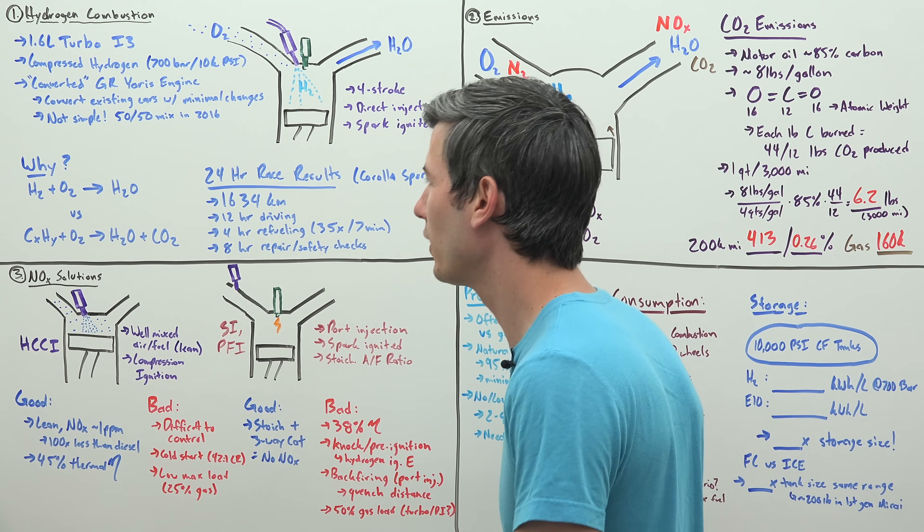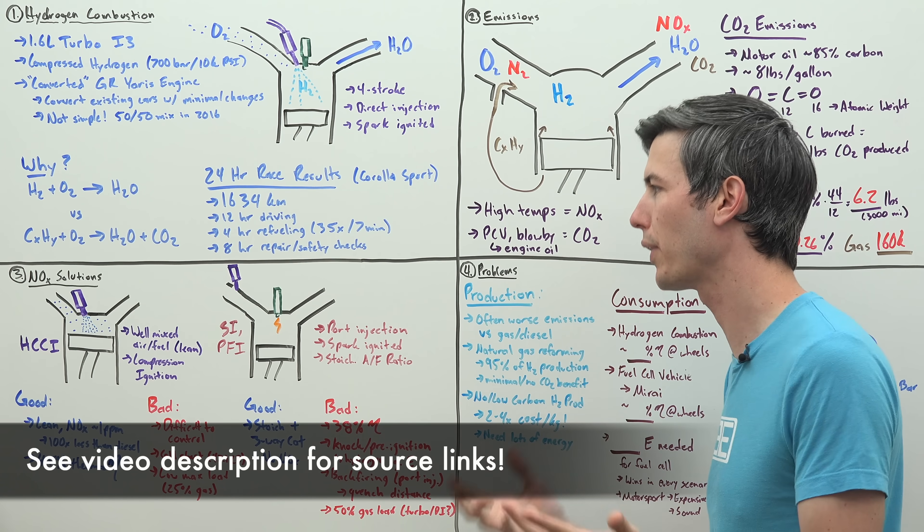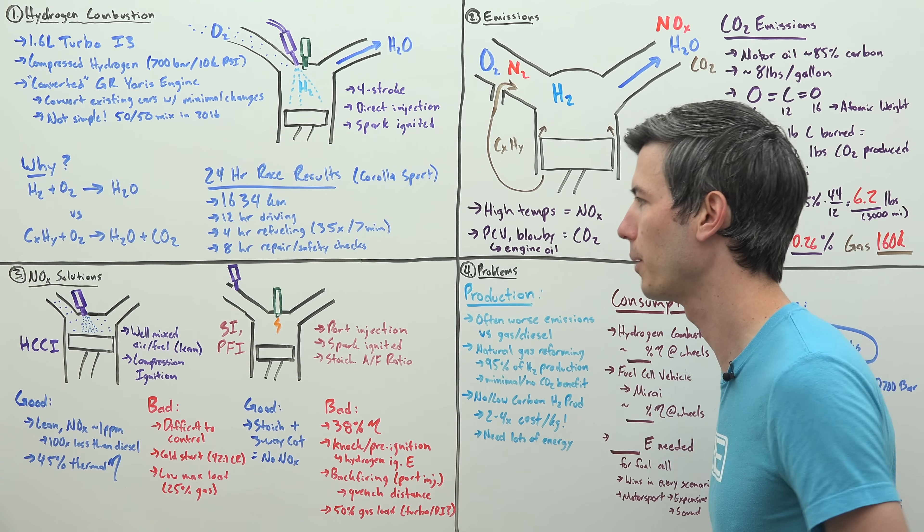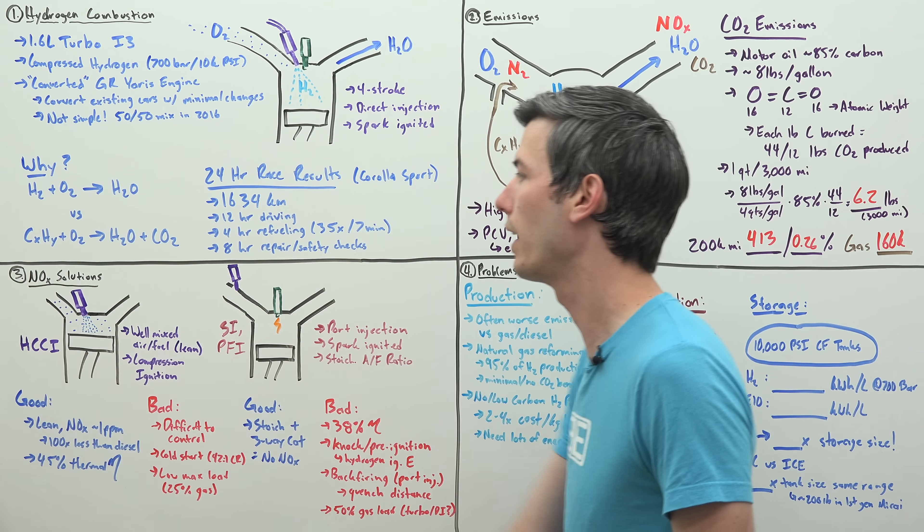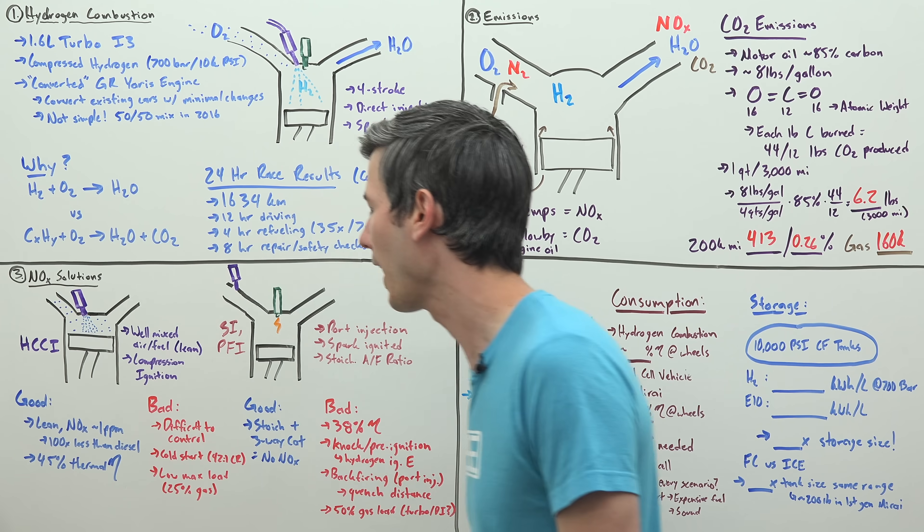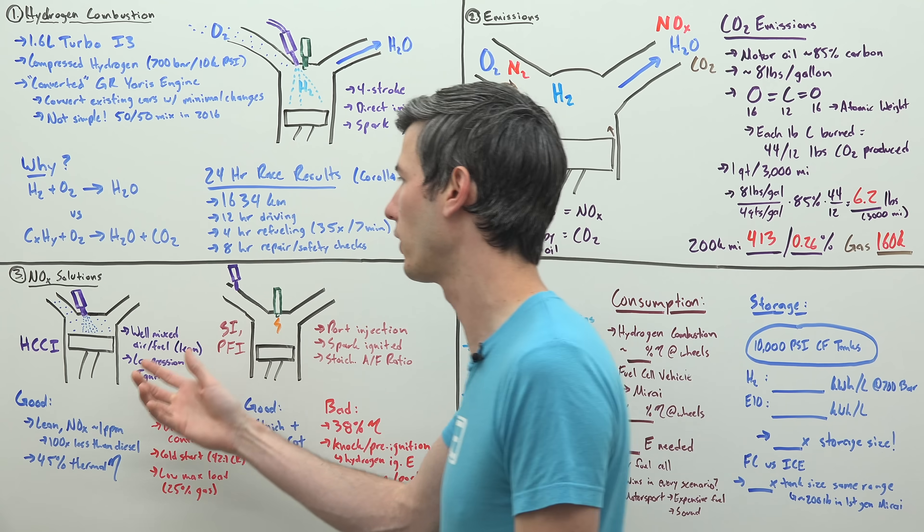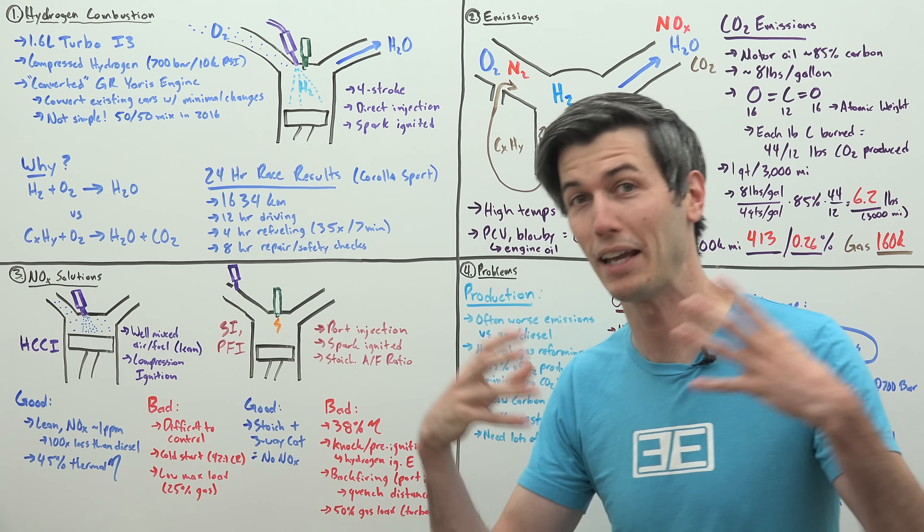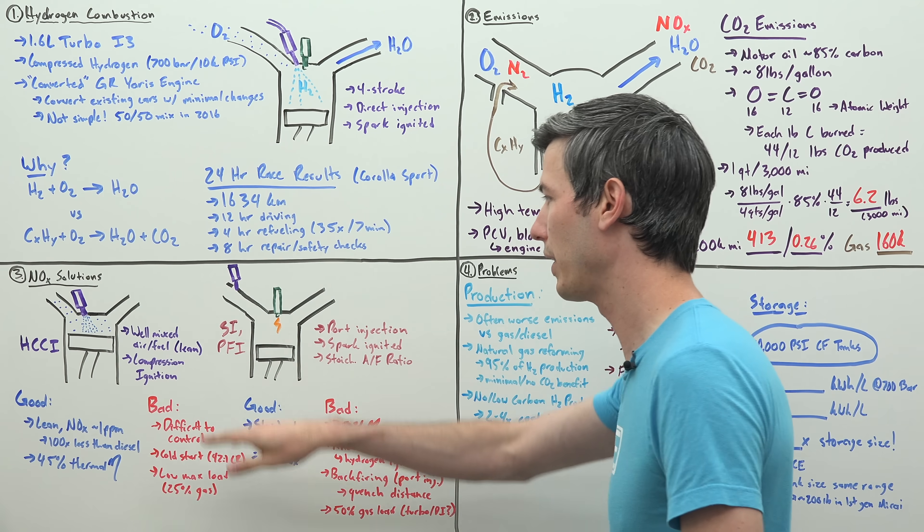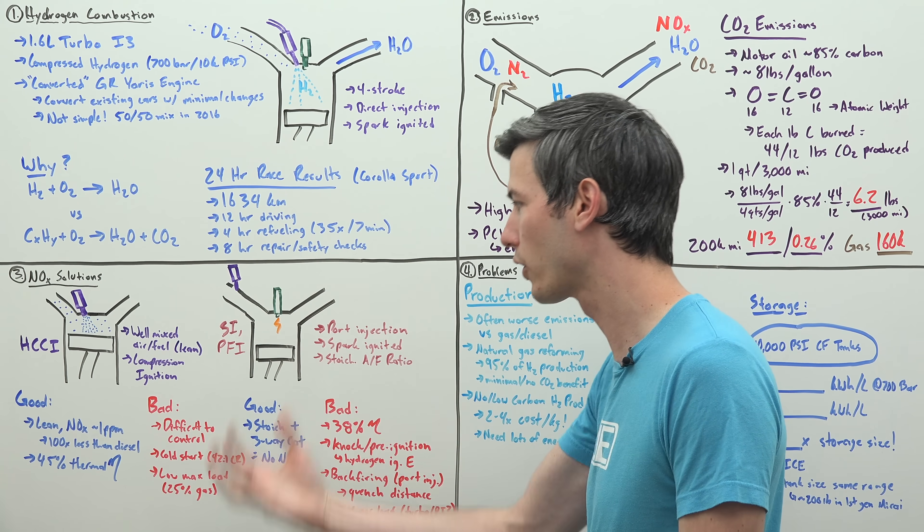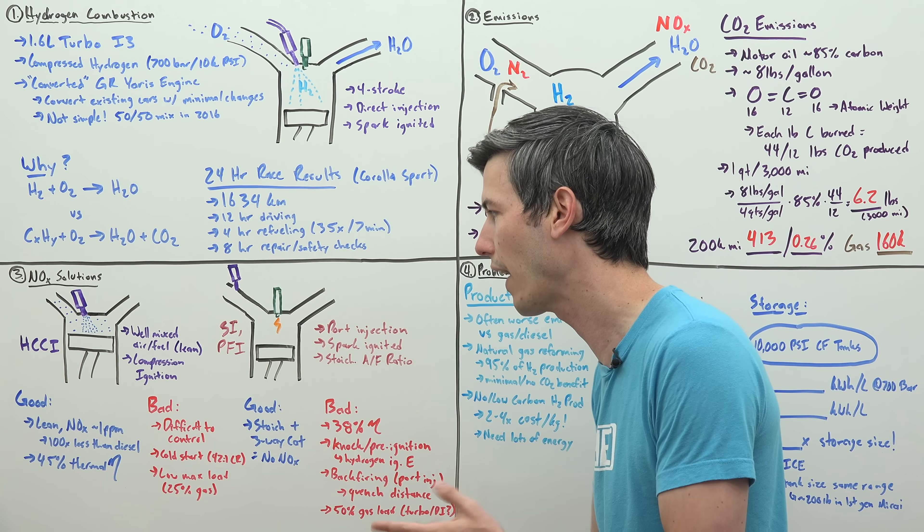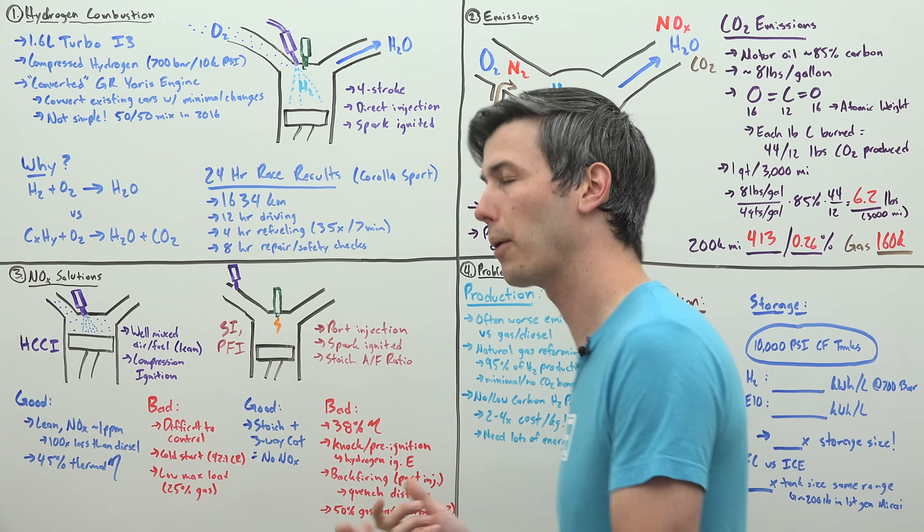How about nitrogen oxide? I found a study that looked at various methods to have a hydrogen combustion engine without much nitrogen oxide emissions. One of those methods is HCCI, homogeneous charge compression ignition, where you have well-mixed hydrogen and air. With compression ignition, if you were able to achieve this, it's very lean combustion, so you don't have much nitrogen oxides, about one part per million.